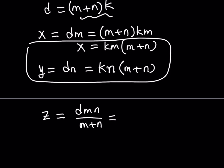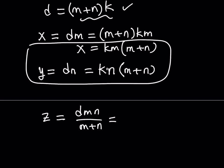So if you go ahead and replace d with what it is from here, you can write m plus n times k for d. And then multiply that by mn and then divide it by m plus n. And what is that going to give you? Well, the m plus n is going to cancel out. And you're going to get z equals kmn from here. Awesome.